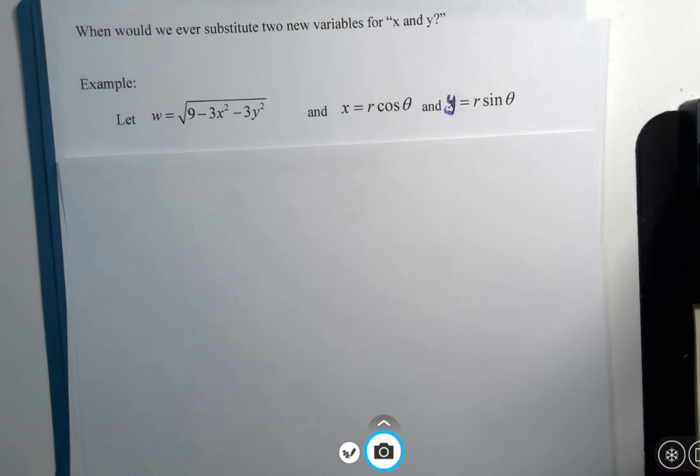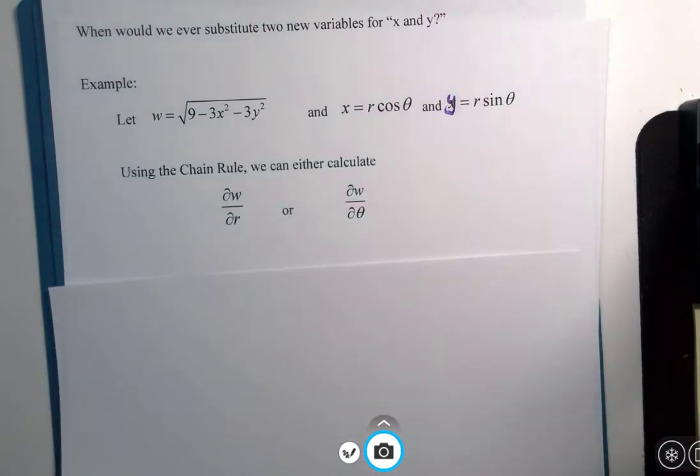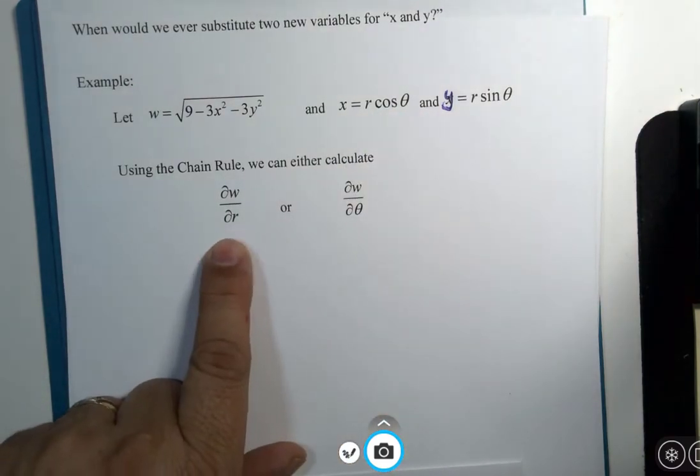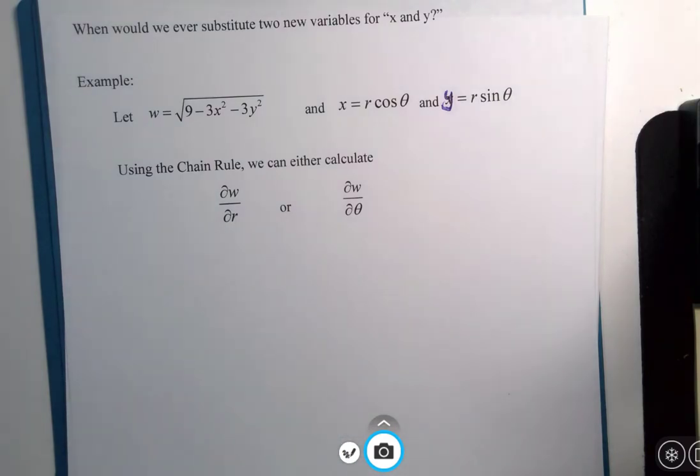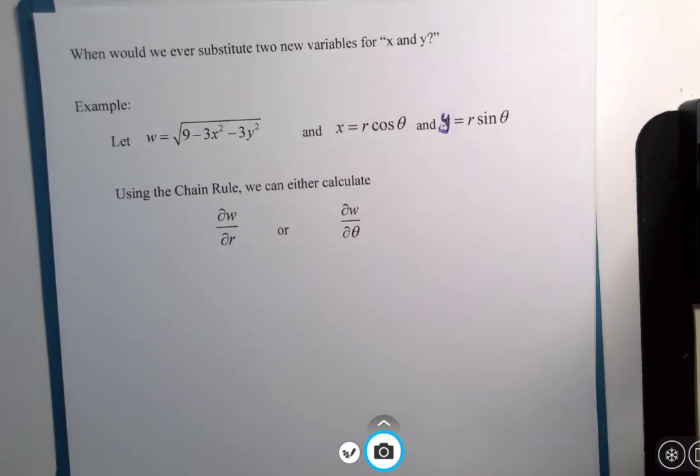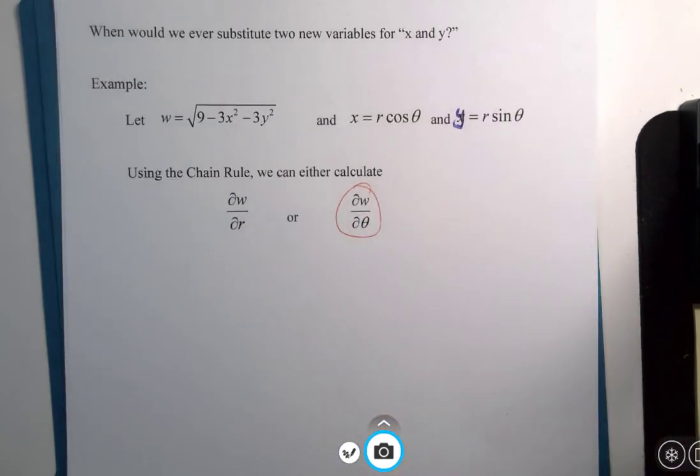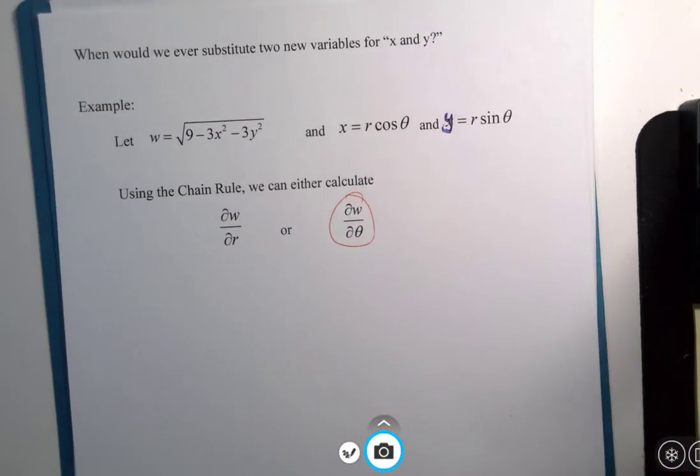Now when we look at this problem, we can calculate two ways. There's two new variables, so we could calculate the partial with respect to r or the partial with respect to theta. And what I've chosen to do is, for this segment, I want to do this one, partial with respect to theta, and show you what happens if I follow the chain rule.